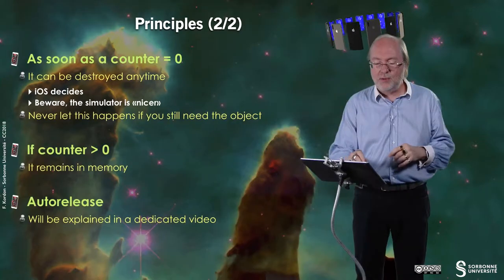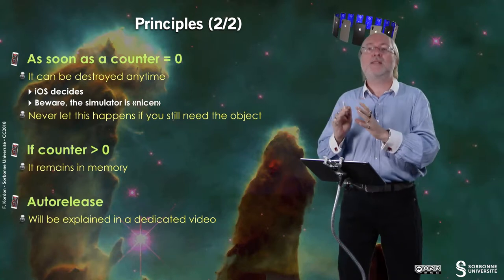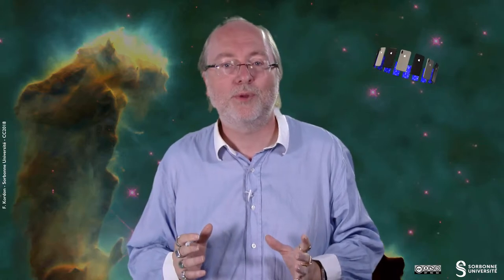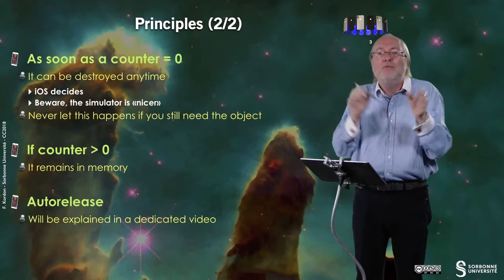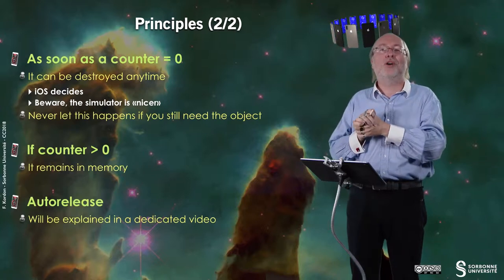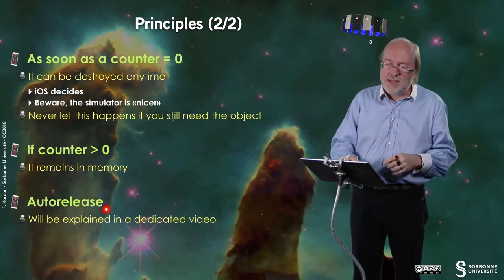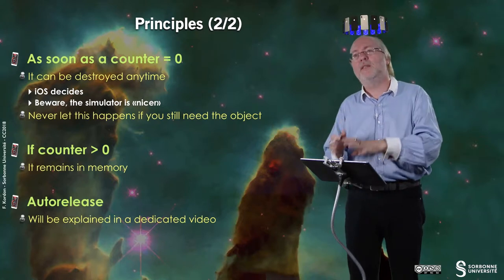So, as soon as the counter is equal to zero, it can be destroyed anytime. In fact, who decides? iOS decides. And you have to be careful because the simulator is much nicer than iOS, because usually the simulator is executed on a machine with much more memory. So you may have some time in between the event that sets this counter to zero and the destruction, the effective destruction of the object. And so, if you still need the object, you never have to let the counter of this object reach zero. Otherwise, it remains in memory. There is a specific case called autorelease that will be detailed in a dedicated video where you are a sort of zombie.